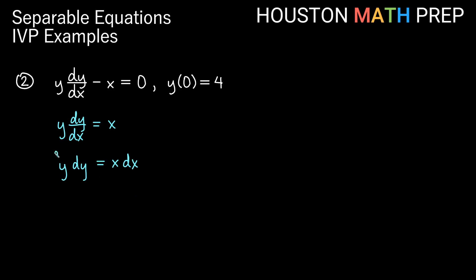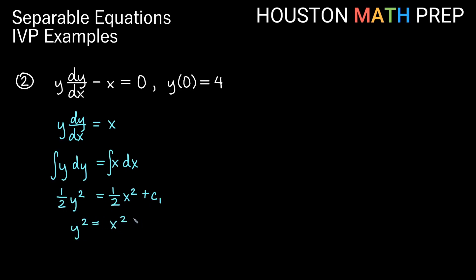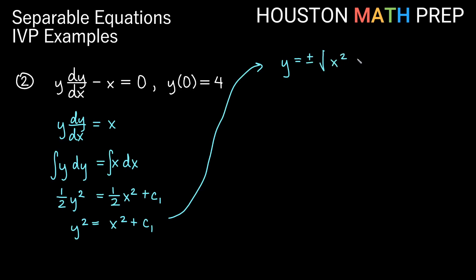We are separated, so we integrate both sides. The antiderivative of y is 1/2 y squared, and the antiderivative of x is 1/2 x squared plus some constant. Can we reasonably solve this for y? I think we can. Multiplying everything by 2 gives y squared equals x squared plus c1. Taking the square root of both sides: y equals plus or minus the square root of x squared plus c1.